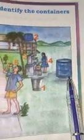Fourth one is a drum, which we use to store water - or you can call it a water tank, a small water tank. Fifth is glass. Sixth one is a watering can.